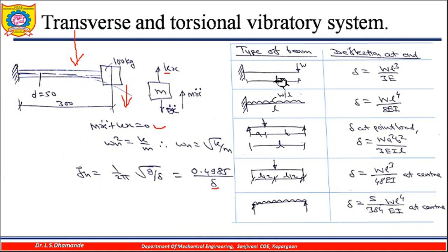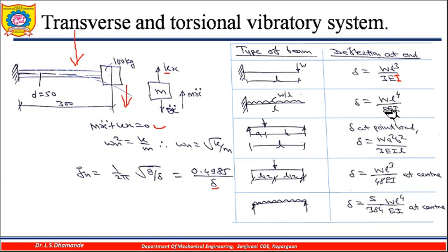To use this formula, deflection equations for different beam conditions are used. For a cantilever beam with a point load at the end of length l, deflection δ = wl³ / (3EI). For a cantilever with UDL, δ = wl⁴ / (8EI). For a simply supported beam with a point load at position a and b, δ = wa²b² / (3EIl). For a simply supported beam with a central point load, δ = wl³ / (48EI). For a simply supported beam with UDL, δ = 5wl⁴ / (384EI).